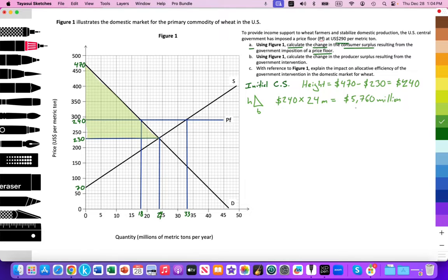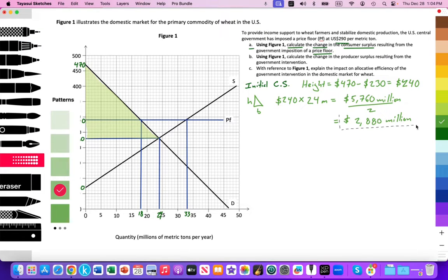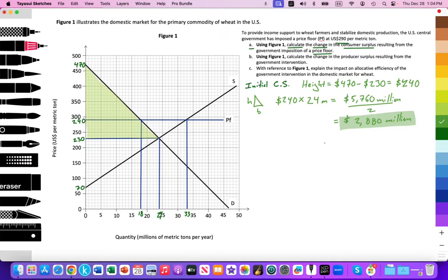And I got to divide that by two because this is a triangle. So I'm going to divide that by two. And that's going to equal 2,880 million. So there is the surface area of that first triangular area. I'm going to highlight that so I remember that that is my answer for that triangle.